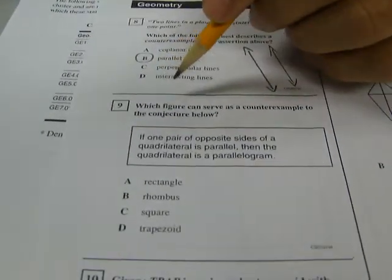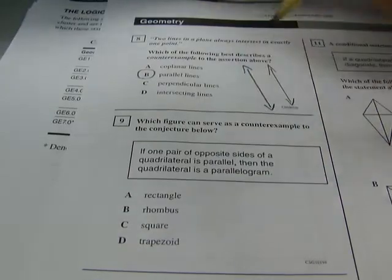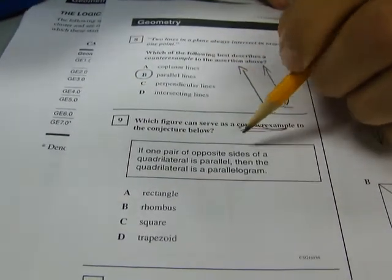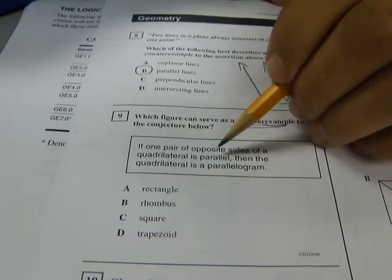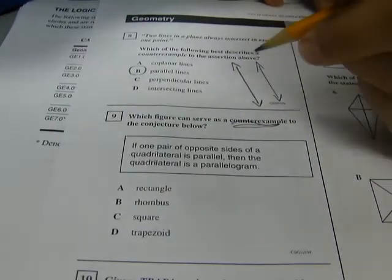Number 9. Which figure can serve as a counterexample to the conjecture below? So again, it's a counterexample, an example that proves the conjecture is false. If one pair of opposite sides of a quadrilateral is parallel, then the quadrilateral is a parallelogram.